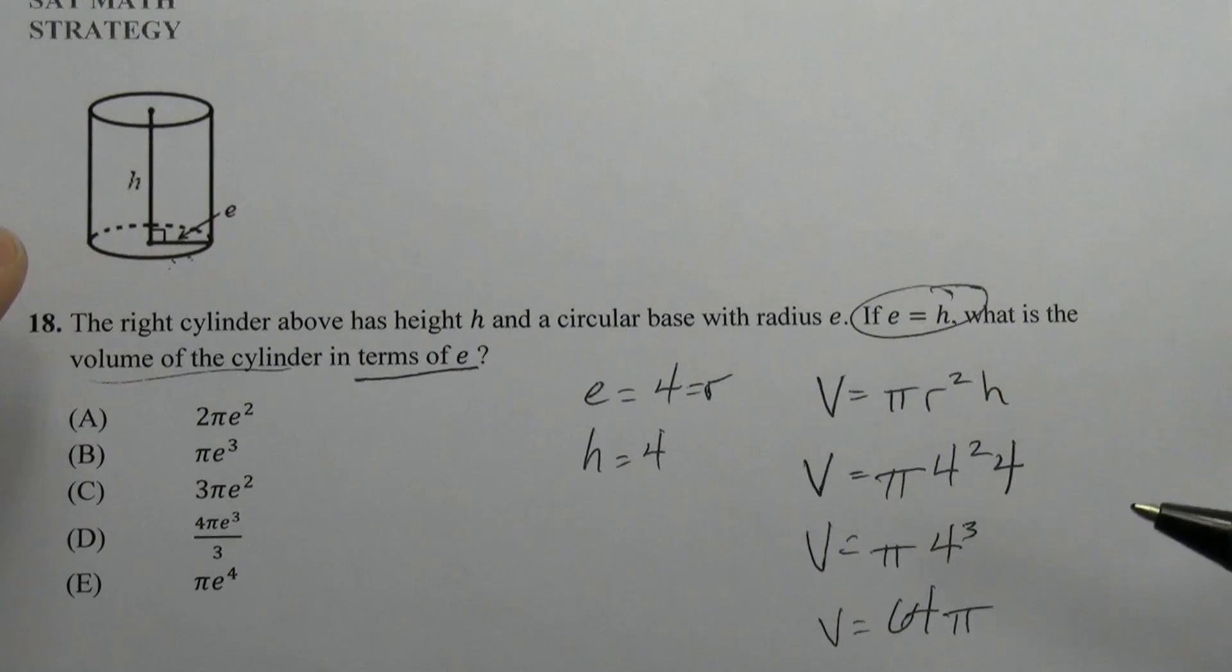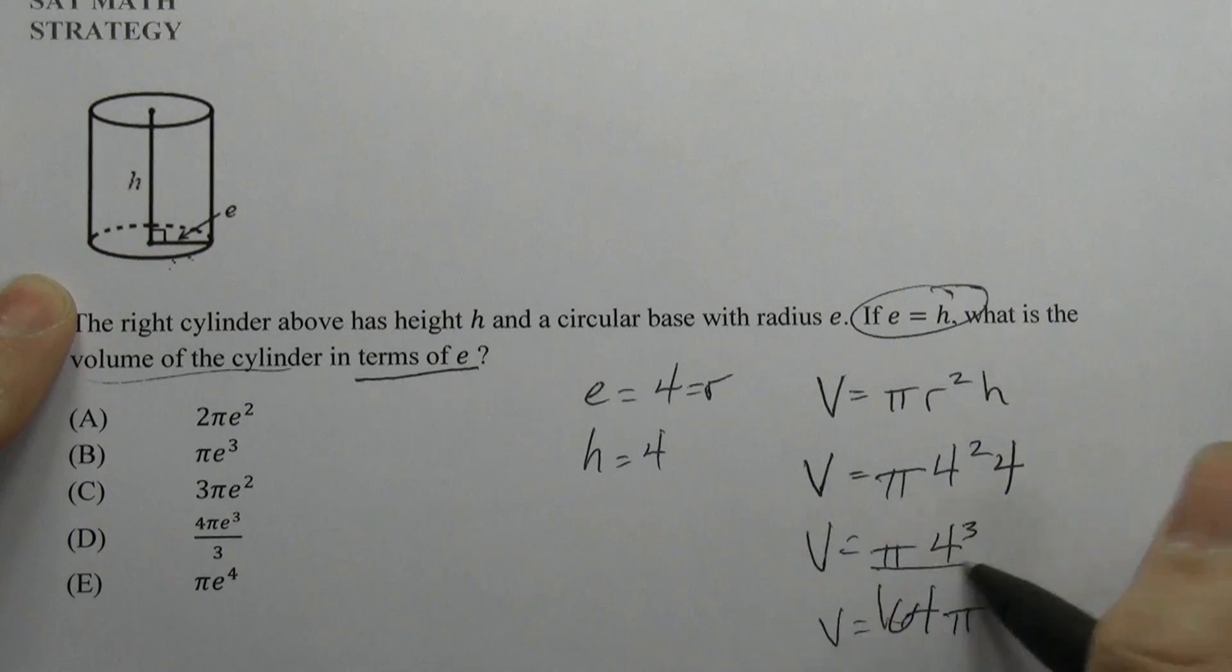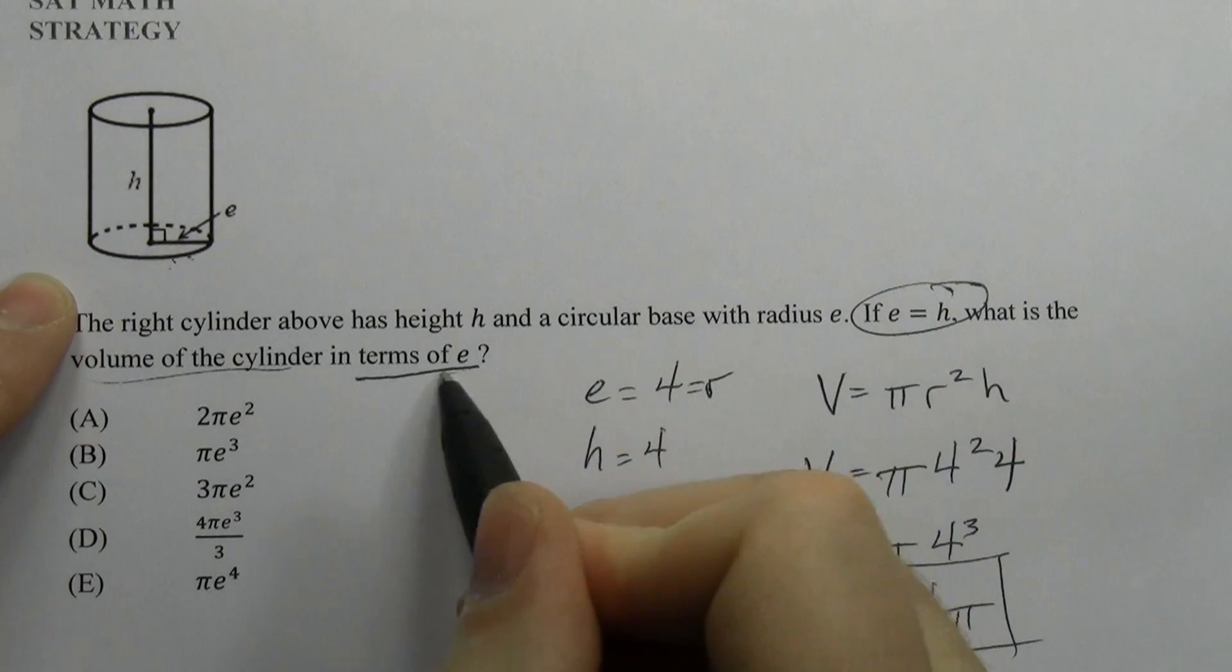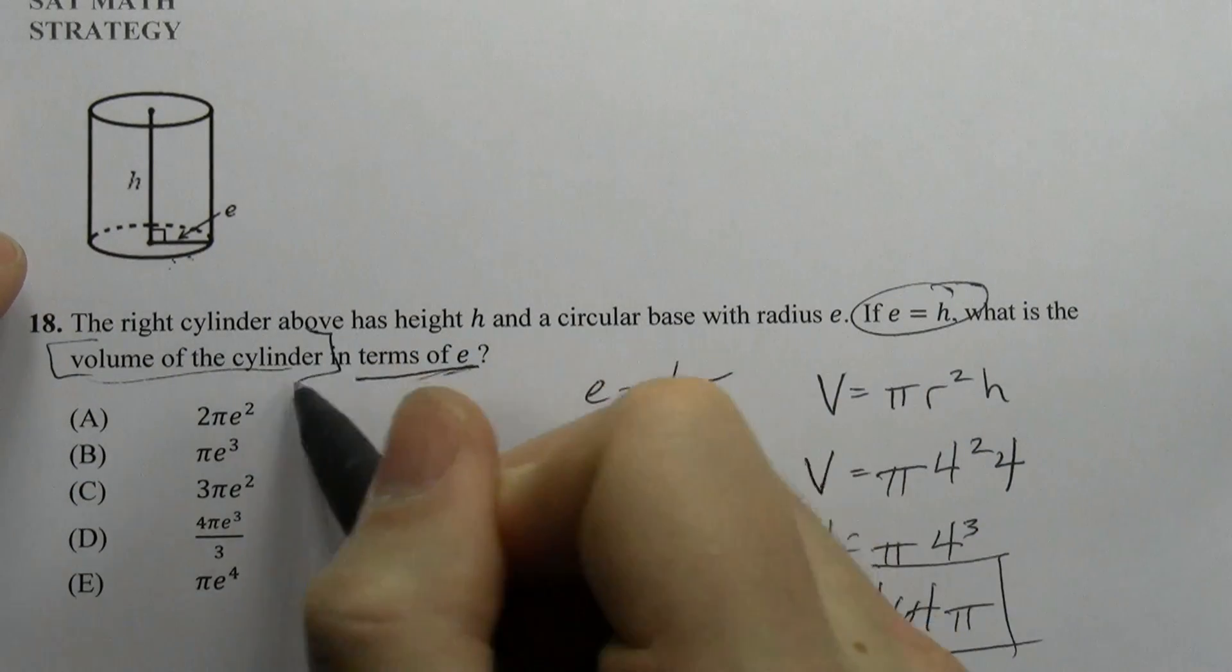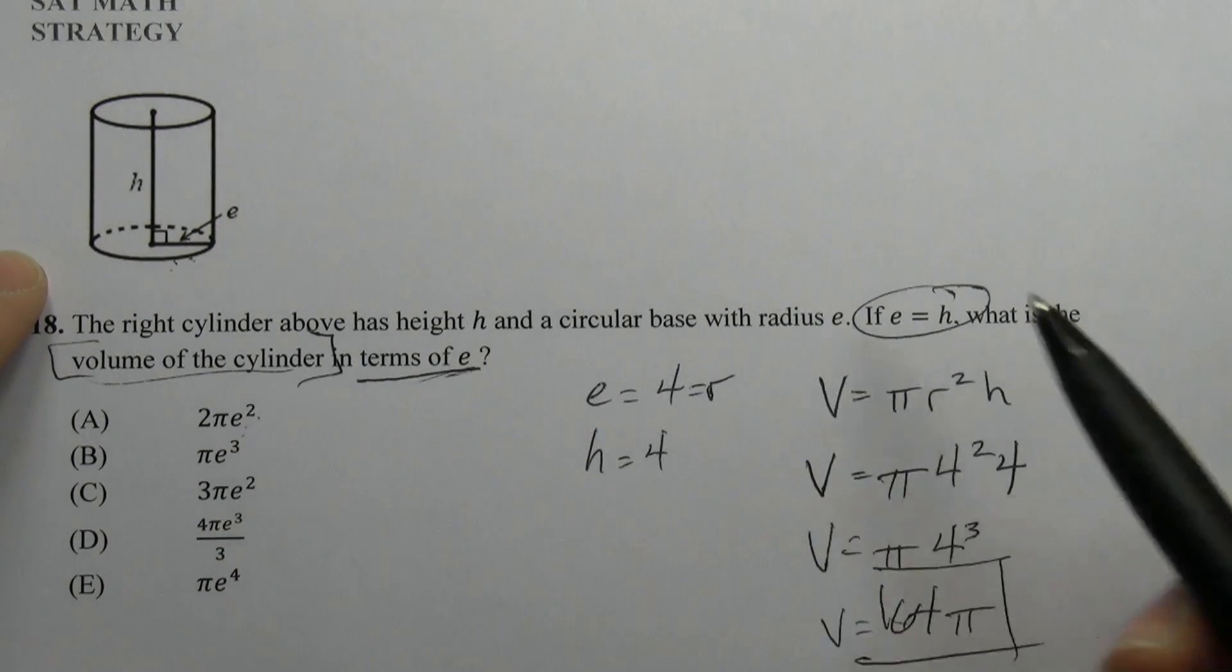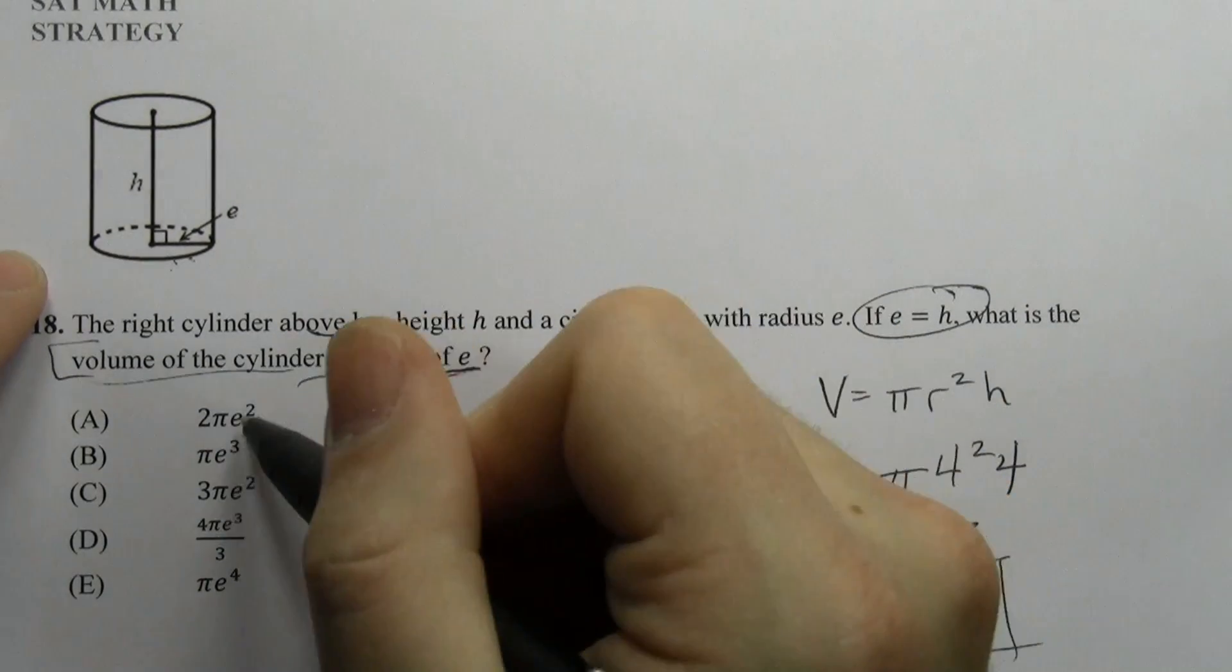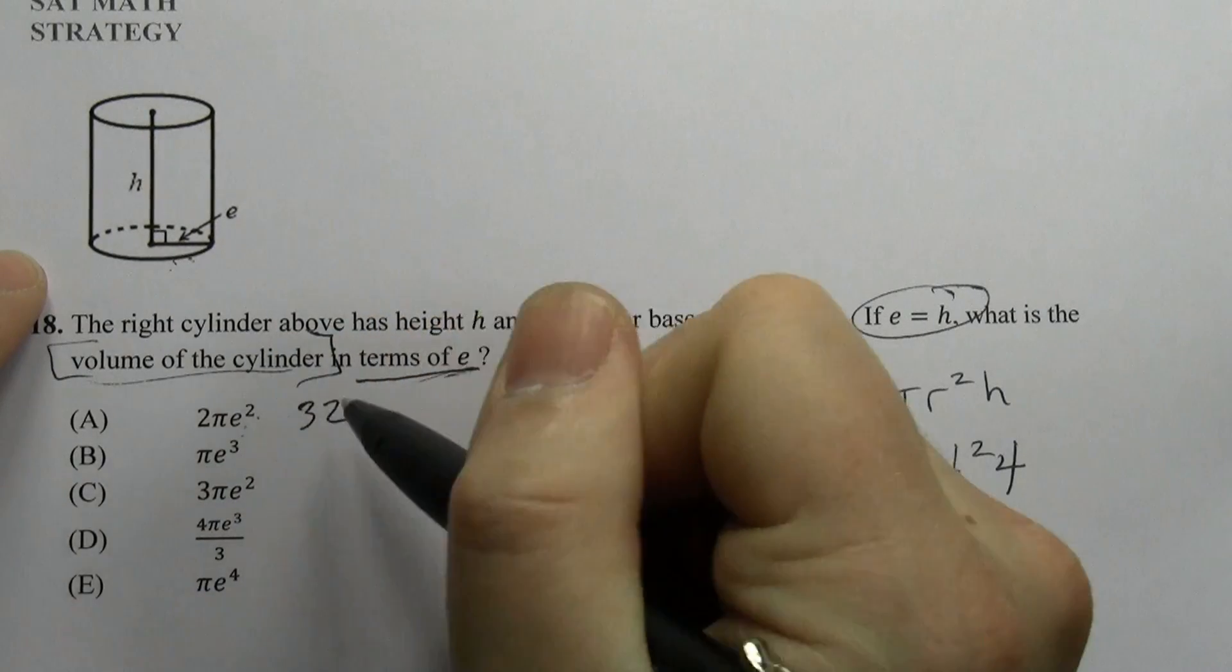And again, we want to look at the answer choices and find the one that equals our target number, the volume of the cylinder. So 2 times e², e is 4, so 16. 2 times 16 is 32π. That's not correct.